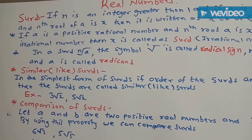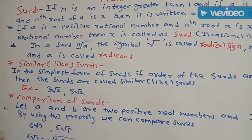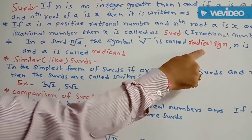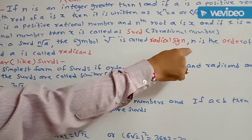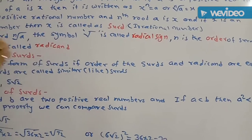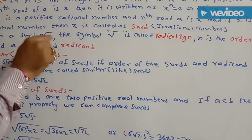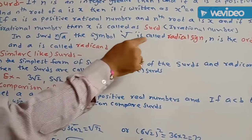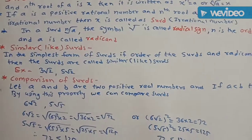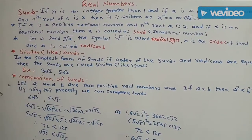In a SIRD, nth root of a — the symbol is called the radical sign. n is called the order of the SIRD, and a is called the radical. So in nth root of a: the symbol is the radical sign, n is the order of the SIRD, and a is the radical.